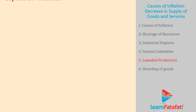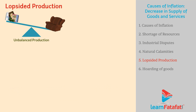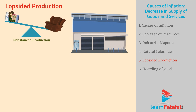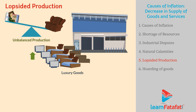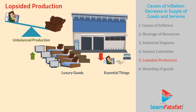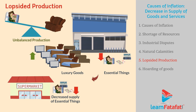Globesided Production: This means unbalanced production. Consider that in an economy, production of luxury goods increases extensively. However, production of essential things decreases. This leads to a decreased supply of essential things in the market and results in inflation.